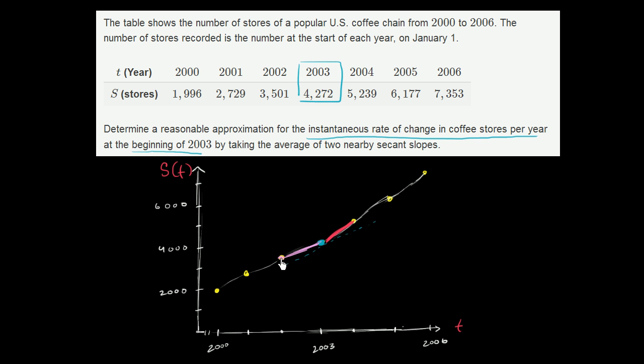So the slope of this pink secant line as we go from 2002 to 2003, that's going to be the number of stores in 2003 minus the number of stores in 2002. So that's the change in our number of stores over the change in years or the change in time. So this is going to be 2003 minus 2002.